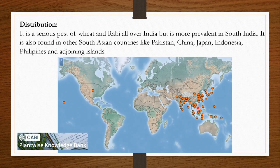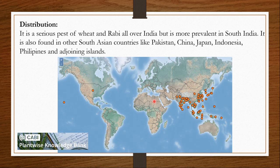As you can see in this distribution map, although it has been reported from western parts, this pest is a major problem for Southeast Asian countries. In India it is found everywhere, but it is more of a problem in South India. It is also found in countries like Pakistan, China, Japan, Indonesia, Philippines and adjoining islands. So it is a major problem mainly for crops in Asian countries.